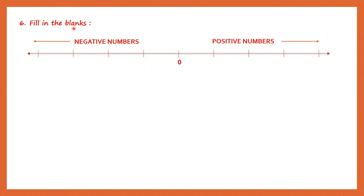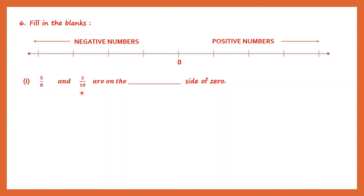Question 6, fill in the blanks. To understand this question I've drawn a number line: 0 is in the middle, positive numbers are to the right of 0, and negative numbers are to the left. Question 1: 5 by 8 and 3 by 10 — both are positive numbers, so both will be on the right side of 0. They are on the same side of 0.